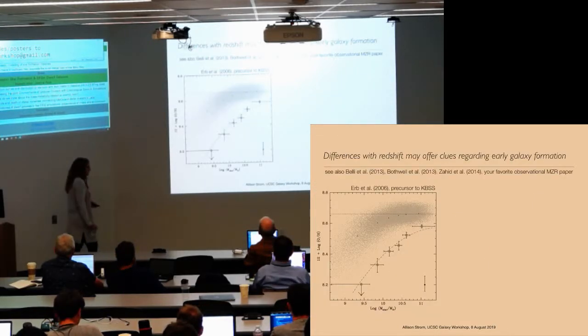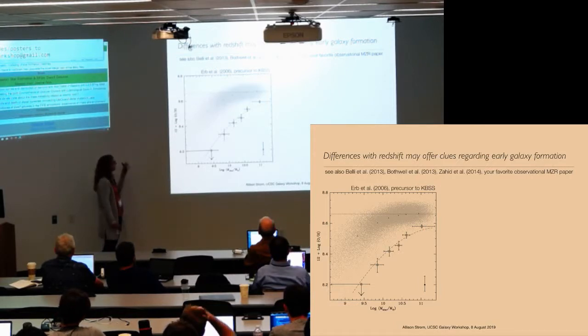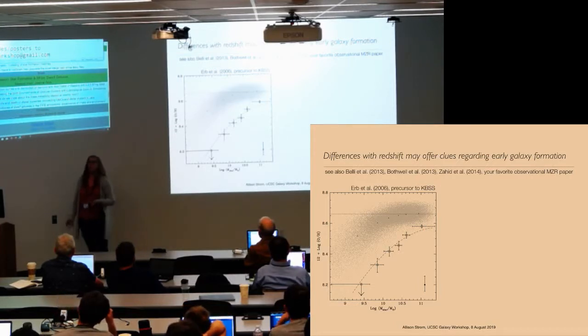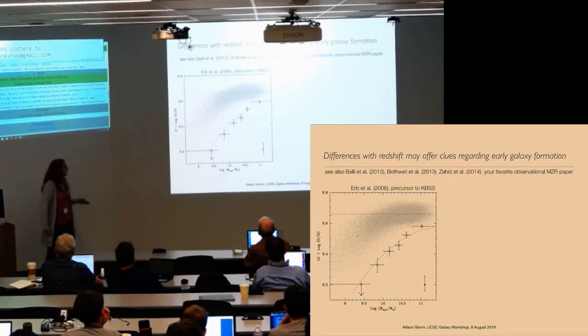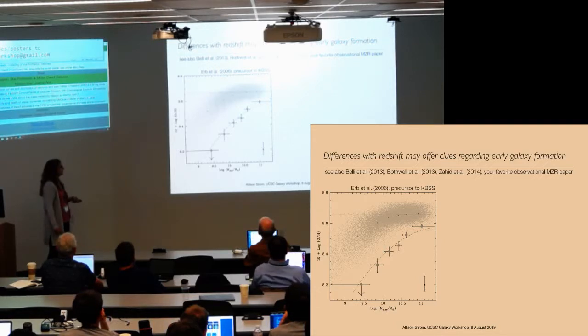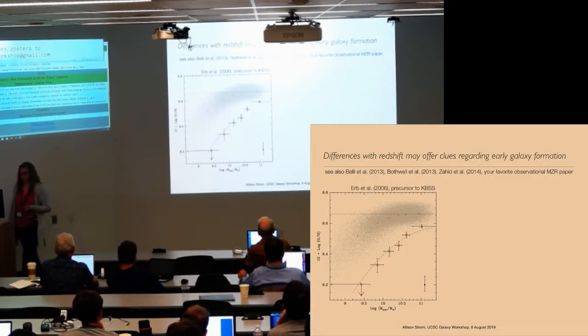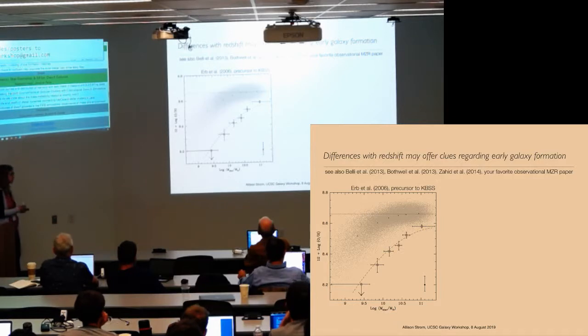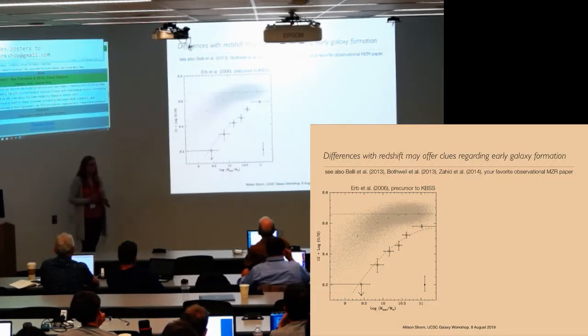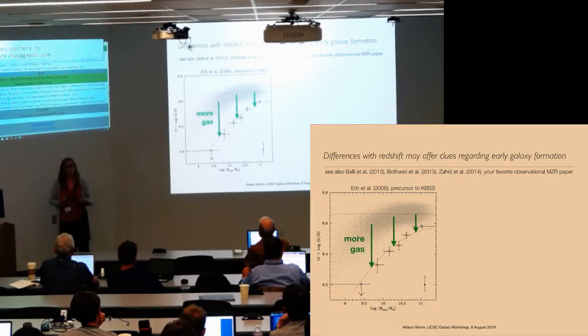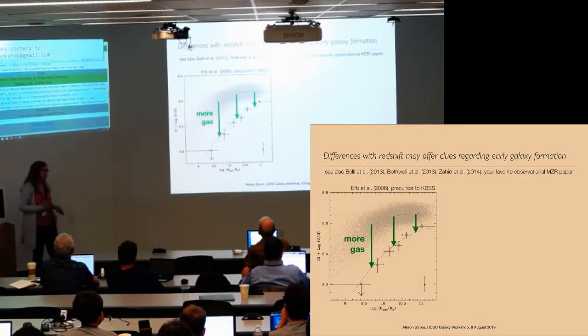Furthermore, we know that the mass-metallicity relation or the mass-oxygen abundance relation evolves with redshift, or rather that it is different at different redshifts. I should be more precise. On the left is a figure from Don Erb's work in 2006, maybe one of the first high redshift, relatively high redshift examples of this kind of analysis showing Sloan and then stacks of redshift II galaxies here using the N2 over H alpha indicator. And this is generally interpreted as an increase in the gas reservoir in galaxies at fixed stellar mass at higher redshift.